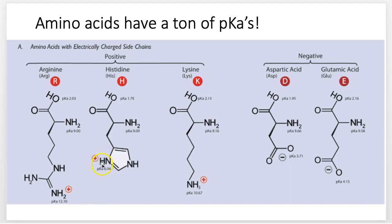Accepting that proton changes the relative charge of the R group, which can change the folding pattern of the protein itself. That's how proteins can shift their shapes — all you have to do is change the pH of your environment and you can get proteins to change conformation. That's one of the main ways we control how proteins work and function inside biological systems — cells. Really, really cool stuff.